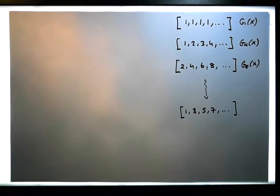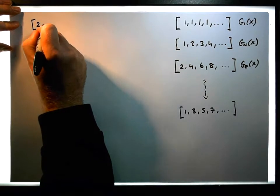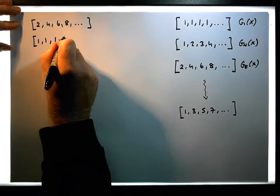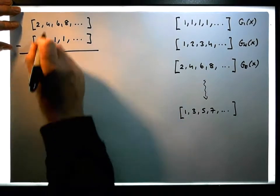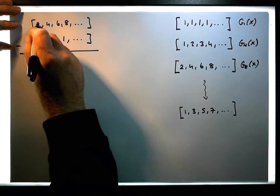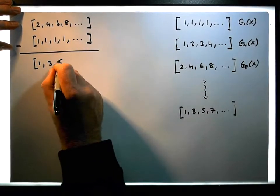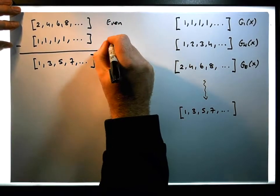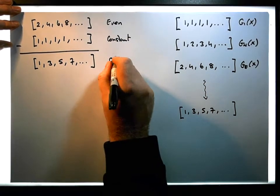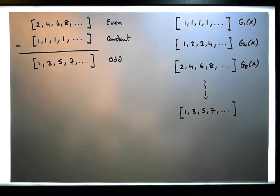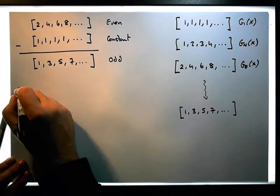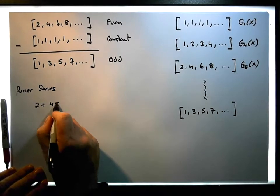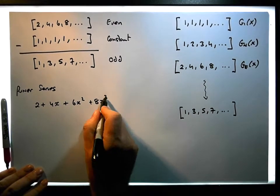Let me write that down algebraically. If we take the even number sequence 2, 4, 6, 8, ... and take away the constant sequence term by term, we get 2−1=1, 4−1=3, 6−1=5, 8−1=7, and so on — the odd numbers. From a power series perspective, the power series for the evens is 2 + 4x + 6x² + 8x³ + ...